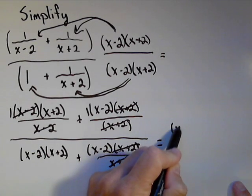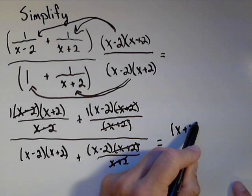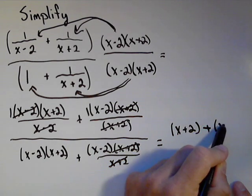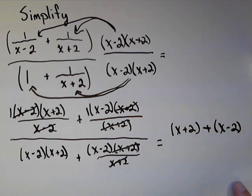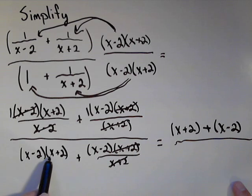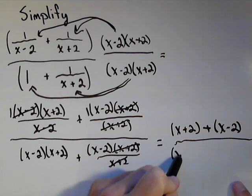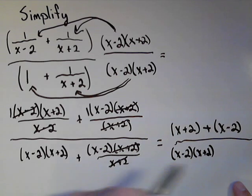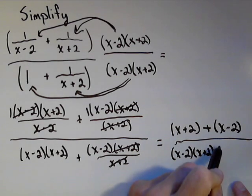I have an x plus 2 plus an x minus 2. In the denominator, I have x minus 2 times x plus 2. x minus 2 times x plus 2. Plus an x minus 2.